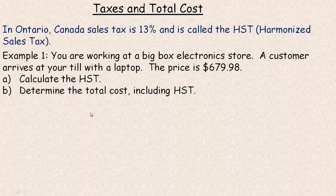In this tutorial we are going to take a look at calculating taxes and the total cost of a purchase. This tutorial was written for the province of Ontario, Canada, where we have a sales tax of 13%, also called the HST, which stands for Harmonized Sales Tax. It's actually the combination of a provincial and a federal tax.